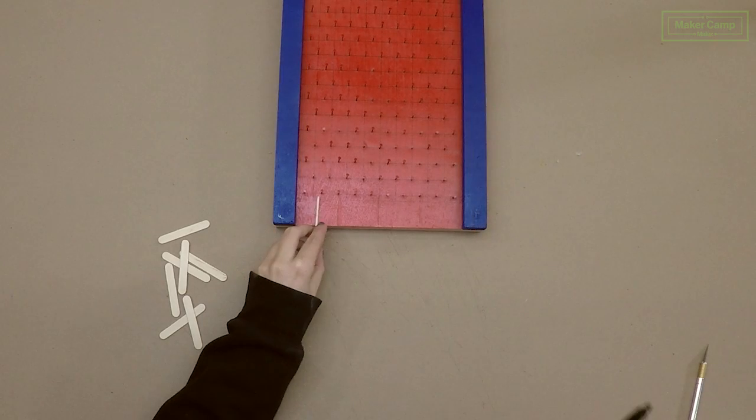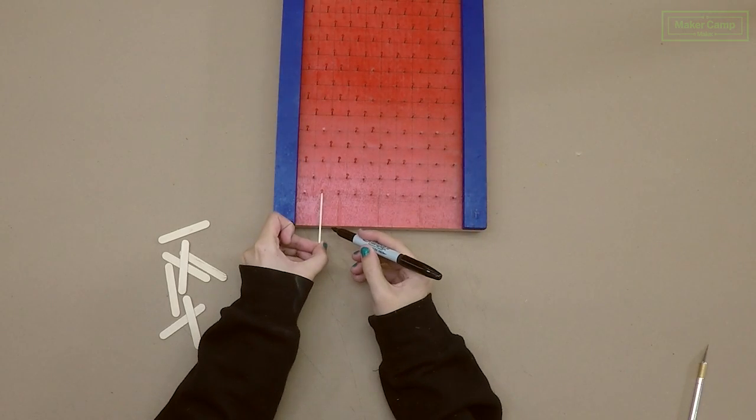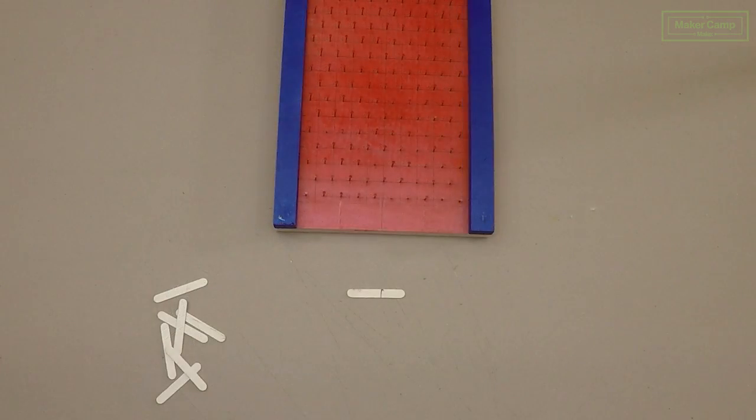Now we're going to make our scoring bucket dividers with our popsicle sticks. First measure the height of your bucket, mark it, and then cut it with your craft knife.